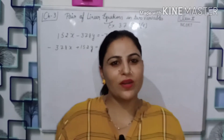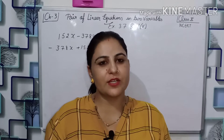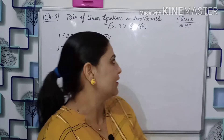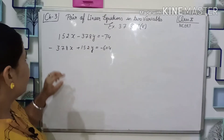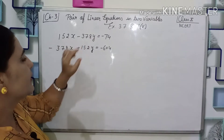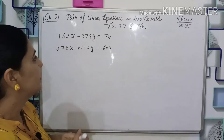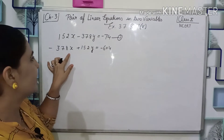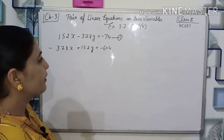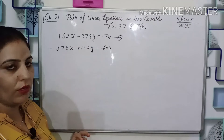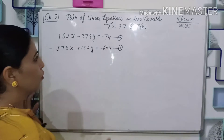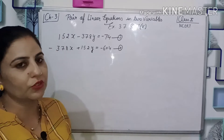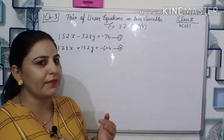Good morning students, welcome. Today we are going to do Exercise 3.7, Question 7, Part 5. We will do something a little new. We have two linear equations: the first one is 152x minus 378y equals minus 74 — that is equation number 1. The second is minus 378x plus 152y equals minus 604 — that is equation number 2. Now, when solving equations we can use elimination, substitution, or cross multiplication.